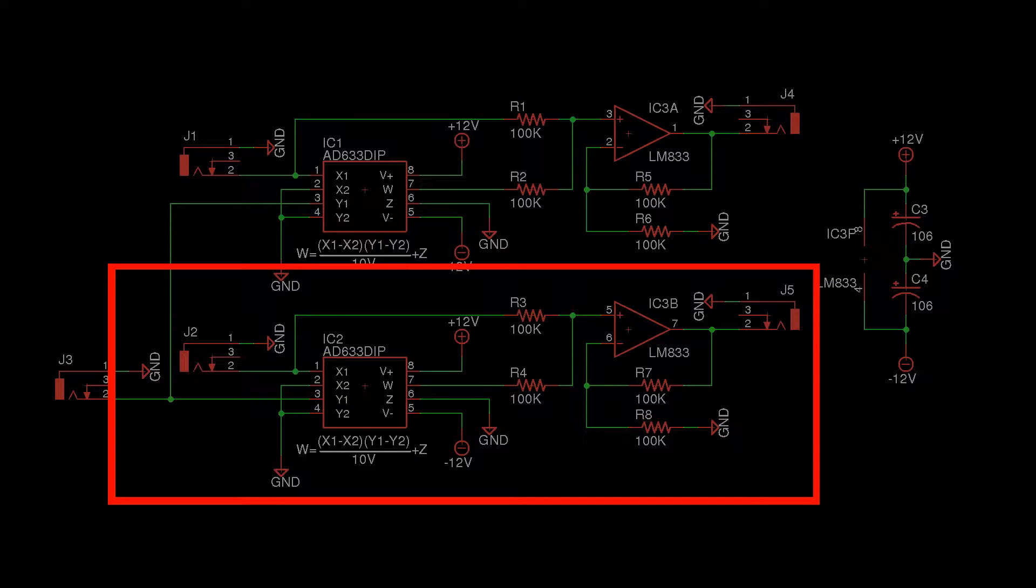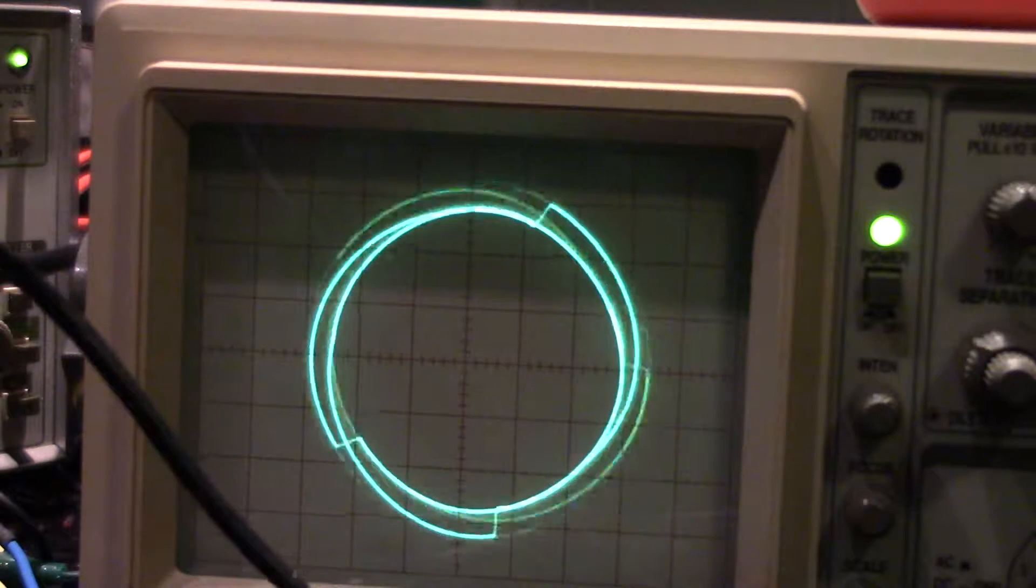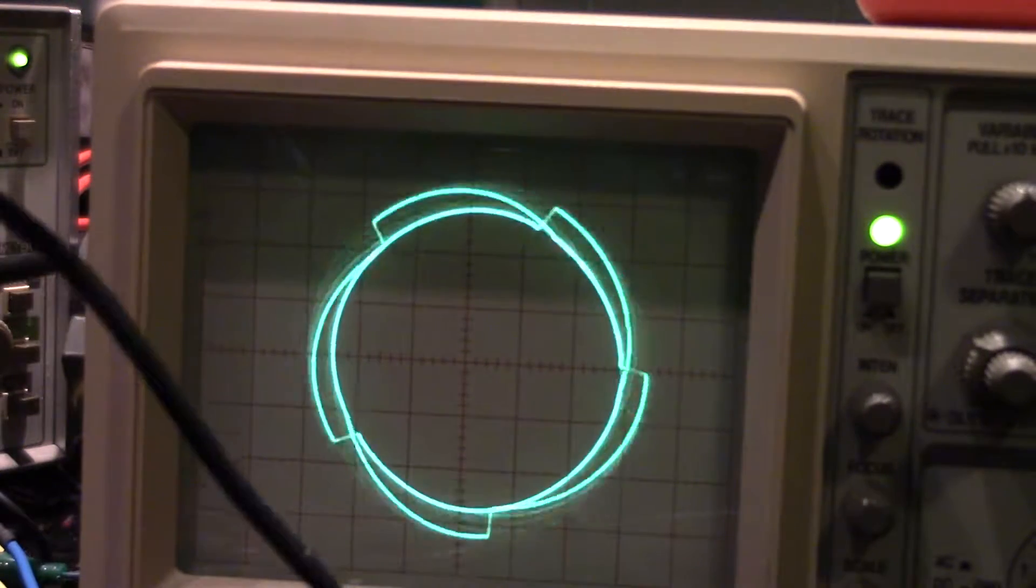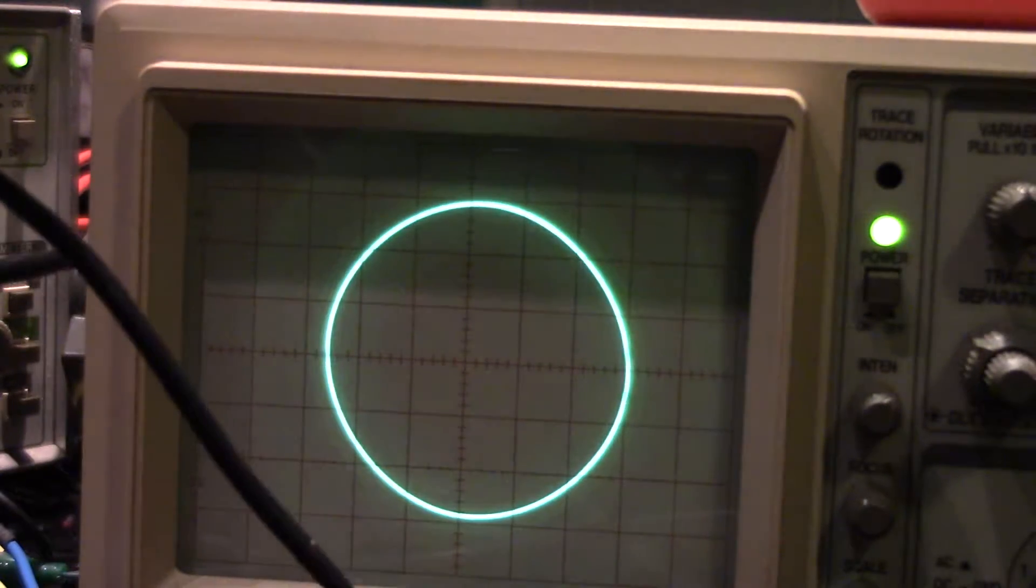Cosine wave multiplication works the same way. As the waves rise and fall being 90 degrees out of phase, this circuit keeps the sound drawn perpendicular to the circle.